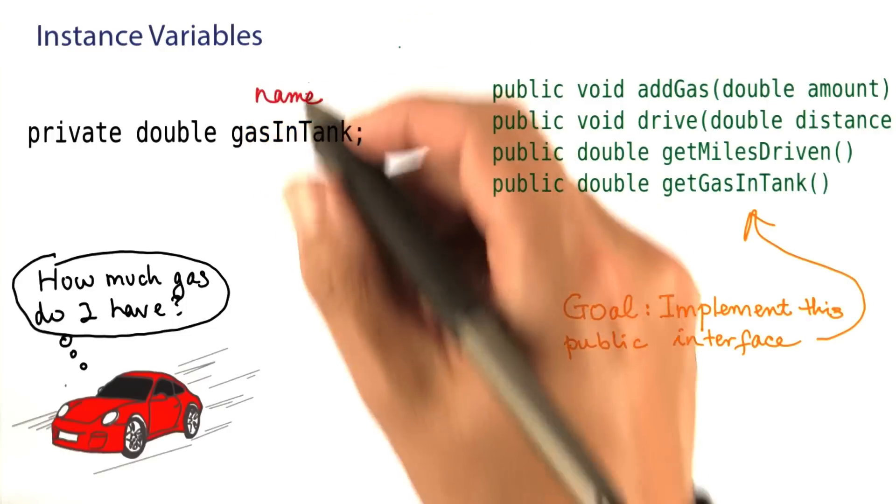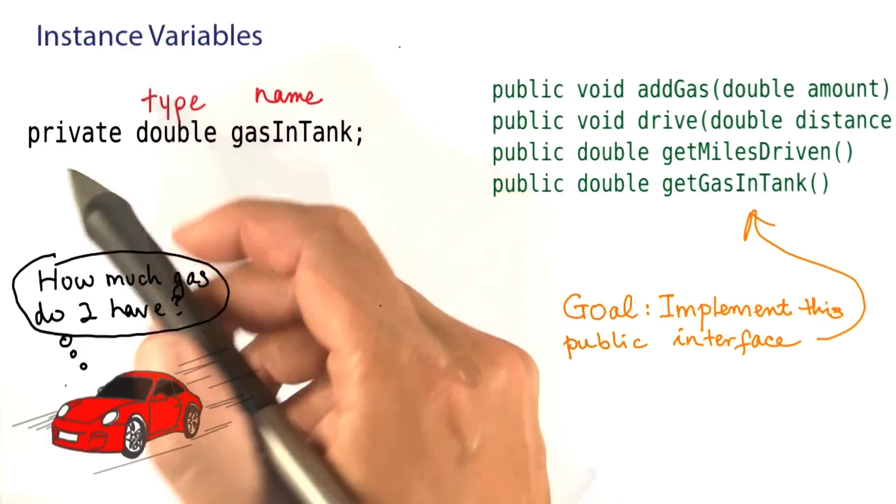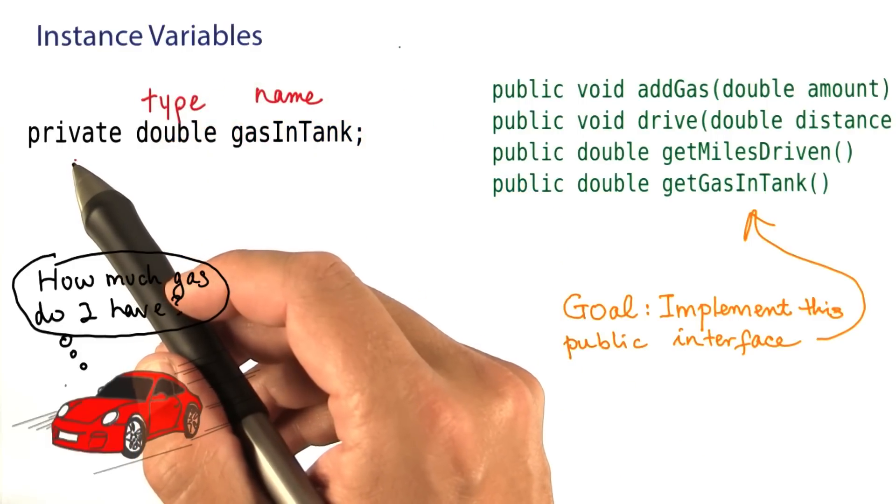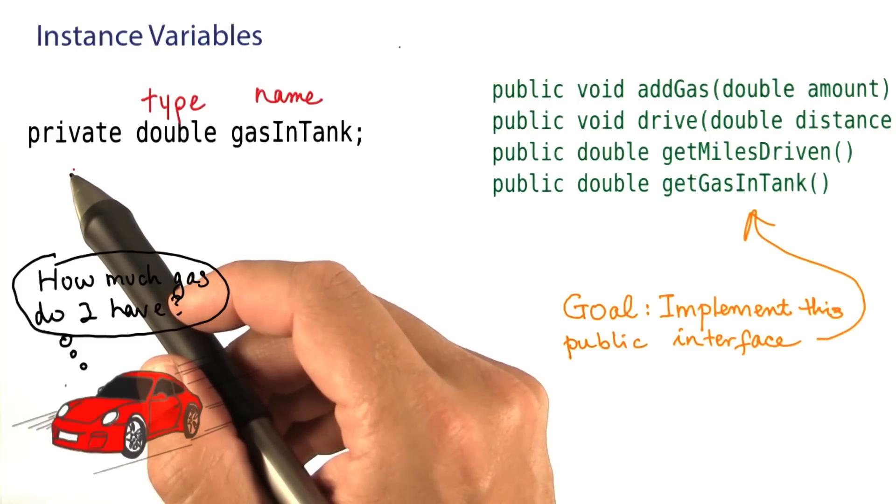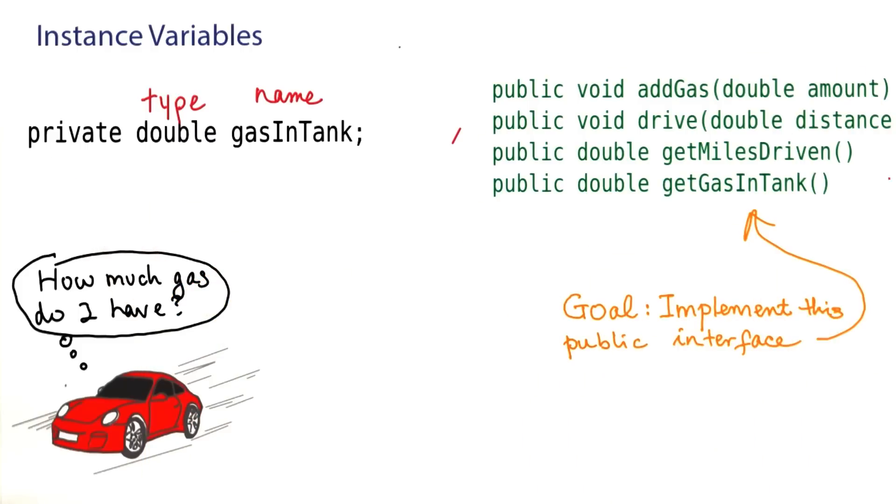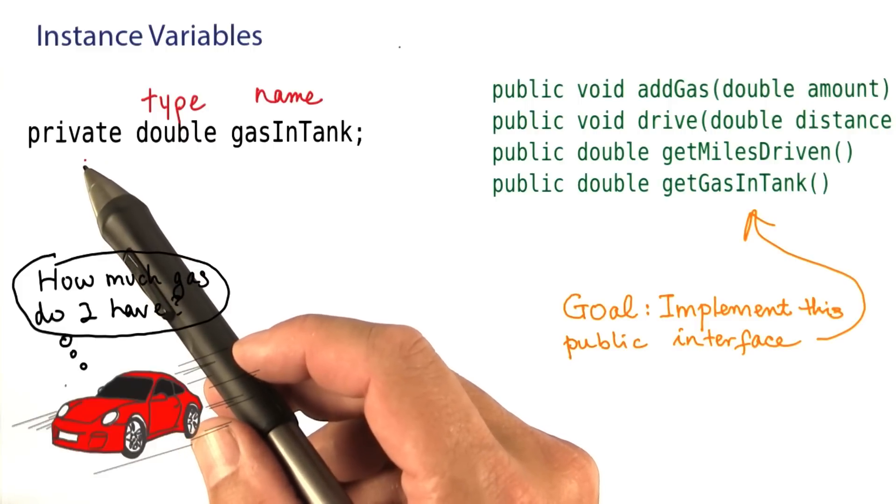The variable has a name, just like the variables that you've seen in the previous lesson, as well as a type. And then there is this keyword private here. That simply means that the variables of an object are a part of the private implementation. The programmer who uses the public interface doesn't need to know about them. You will always want to declare instance variables as private.